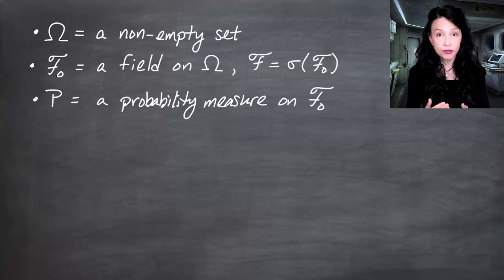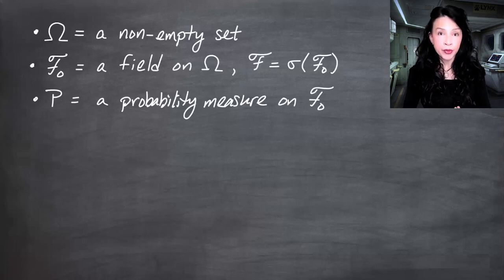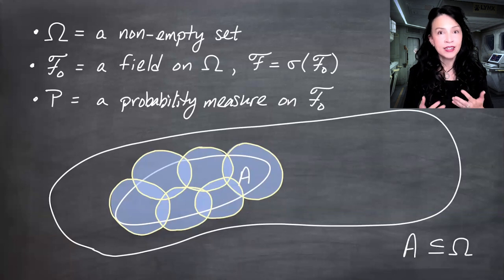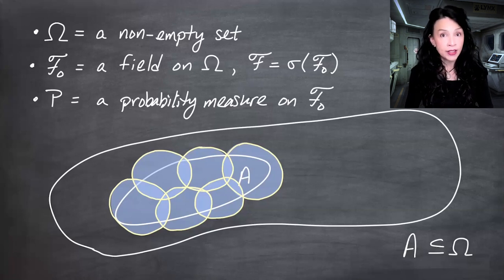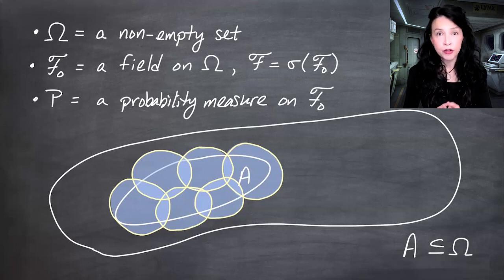What we've started doing so far has not even considered that bigger sigma field. We've just been looking at some subsets of omega, whether they're in the field, sigma field, or neither. So if you take any A subset of omega, our idea — since probability has been defined only for sets in the field F-naught — was to cover this set with a collection of sets from F-naught. In the picture, I'm covering set A with six sets all in F-naught, and if I add the probability measure for all six sets, that might be one idea about how to define a probability measure for A.